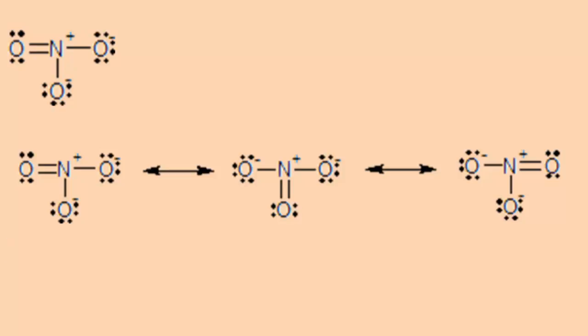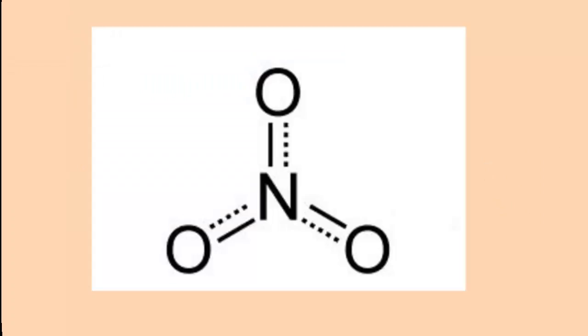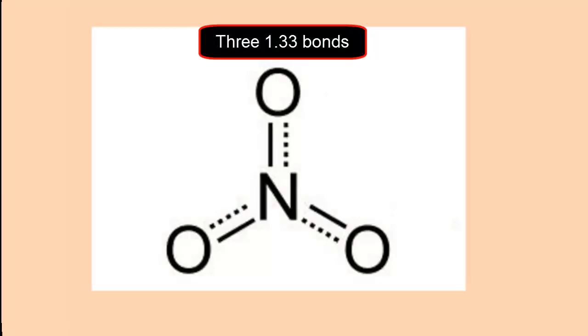Experiments show that the bond length between the nitrogen and the oxygens are all the same. Therefore, the realistic Lewis structure would be represented as this Lewis structure. In this Lewis structure we see that the bond lengths between the nitrogen and the oxygens are all the same.